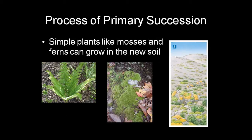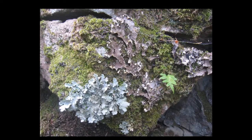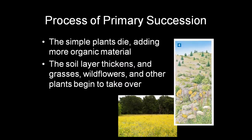As the layer of soil thickens, you'll have new species of plants growing, like mosses and ferns. Here's a rock that has lichen growing on it and has also developed a layer of moss. With the small plants dying — mosses and ferns — the level of soil is going to get thicker, which allows plants like grasses and wildflowers to start to grow.